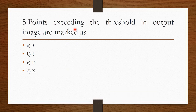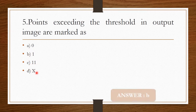Question 4: Points exceeding the threshold in the output image are marked as — Option A: Zero. Option B: One. Option C: One. Option D: X. The correct answer is Option B — One.